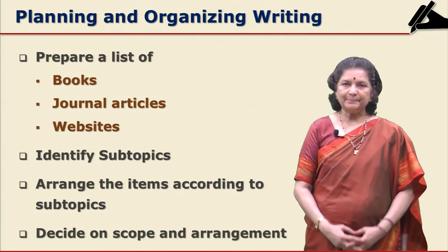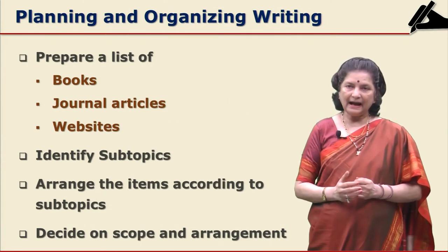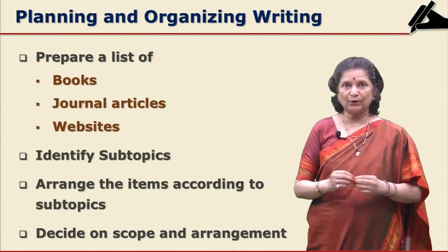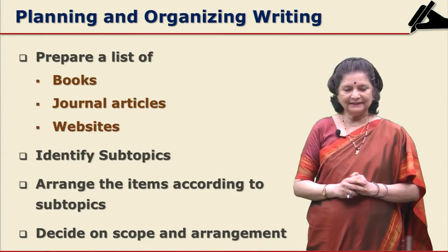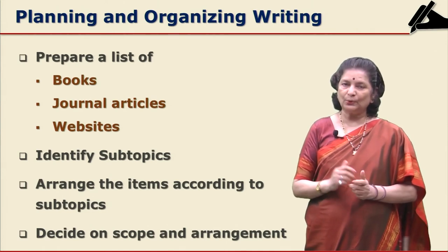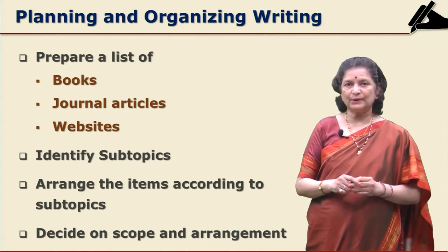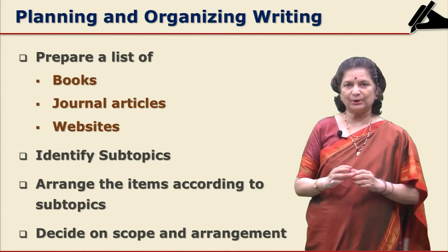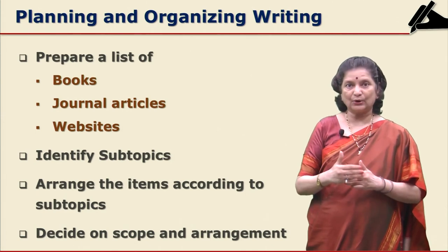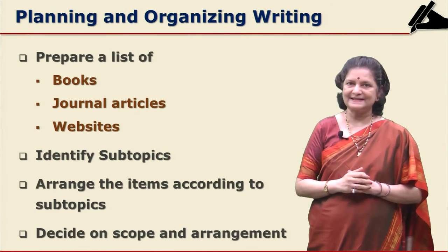After preparation of the working bibliography by listing items, identifying subtopics, and arranging items according to subtopics, you can then decide on the scope and arrangement of your own literature review — how you are going to arrange your subtopics, which subtopic comes first, and which comes later, according to its importance to your own area of research.